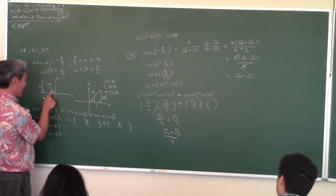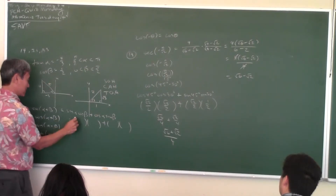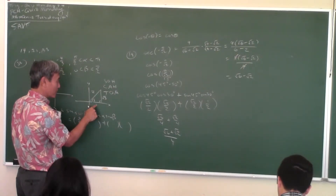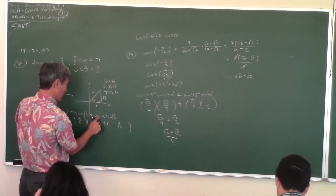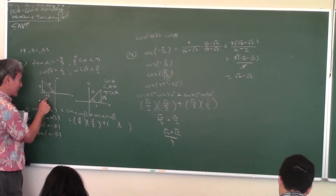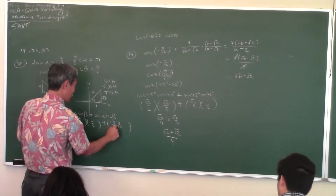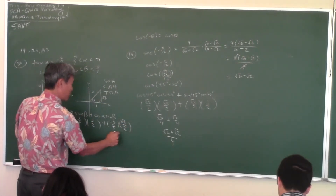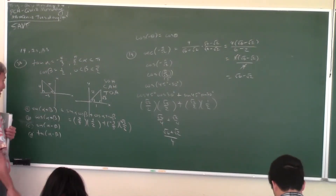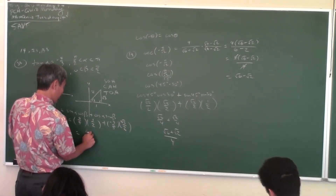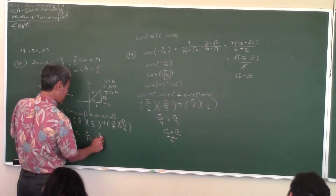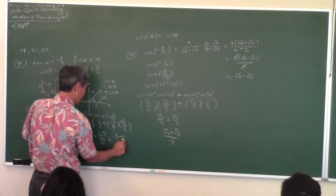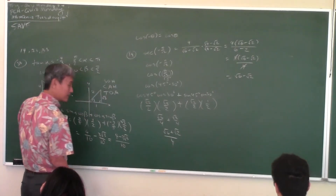Sine of α is opposite over hypotenuse. Cosine of β is adjacent over hypotenuse. Cosine of α is adjacent over hypotenuse. Sine of β is opposite over hypotenuse. All you do is draw the triangle and SOH-CAH-TOA. Computing: 4 over 10 minus 3 root 3 over 10, so since they have the same denominator: (4 minus 3 root 3) over 10. That's your answer.